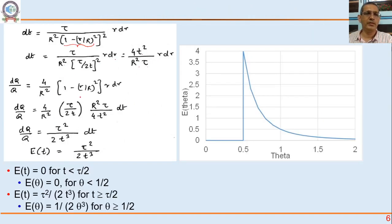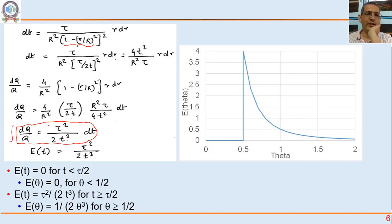So dq/q = (τ²/2t³)·dt. If we integrate the right-hand side from 0 to infinity, the left-hand side integrates to 1. This means the integrand is exactly the E-curve: E(t) = τ²/(2t³).